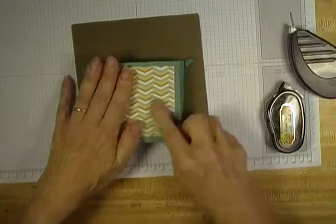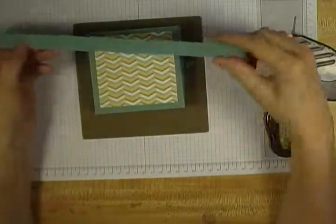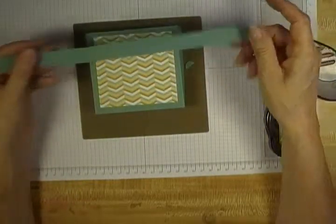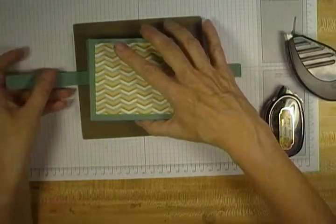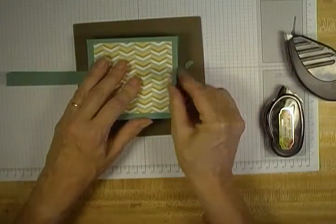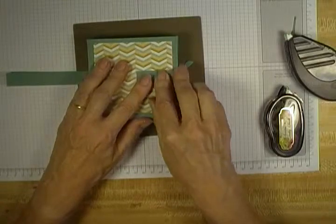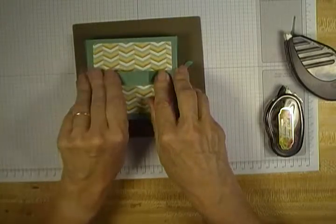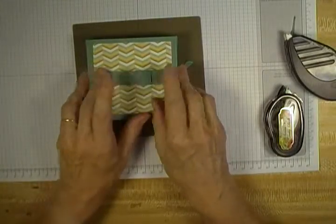And once I have that, I am going to get an 11 by three quarter inch strip of the Lost Lagoon. You'll be able to cut this off the same piece as for your box. When you take that six inches off, you're going to have another two and a half inch piece left so you'll be able to use it.